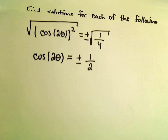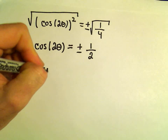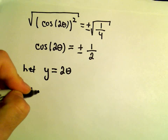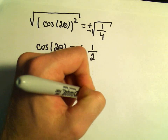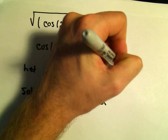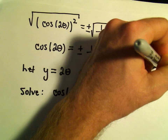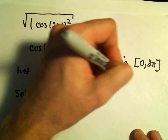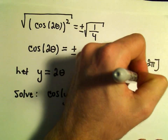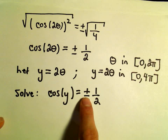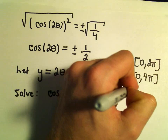What I usually do on these is make a little substitution. Let y equal 2θ. So now I'm trying to solve cosine of y equals positive or negative 1/2. The idea is that the interval has changed, because originally we wanted θ to be in the interval 0 to 2π. That means 2θ would have to be in the interval 0 to 4π. Since 2θ is the same as y, we're finding all solutions to cosine y = ±1/2 in the interval 0 to 4π.